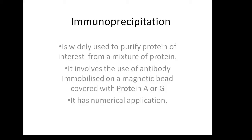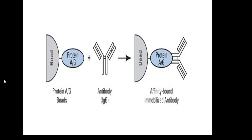The sensitivity of the immunoprecipitation technique is very high compared to western blot, so this technique can also be used for the enrichment of low-abundant proteins. It also helps us to study protein-protein interactions and protein complexes, and it can help us identify those proteins which are present in a protein complex.